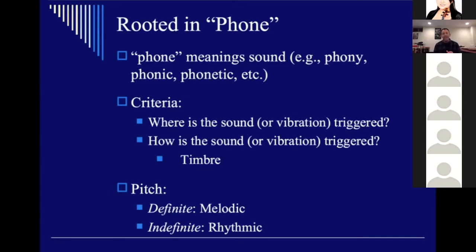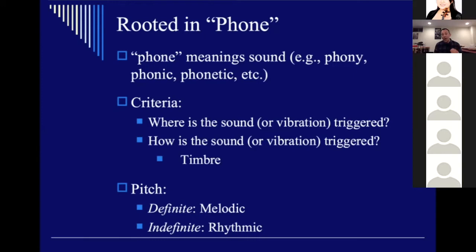The criteria of the Sachs-Hornbostel system rest on two basic questions. The first question is: where does the sound — the vibration — occur? Understanding that pitch is nothing more than a vibration, we ask: does it occur on a string, via air, via a membrane or skin, or is it the entire body that vibrates to produce the sound?